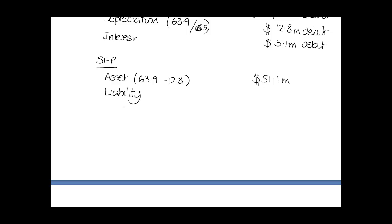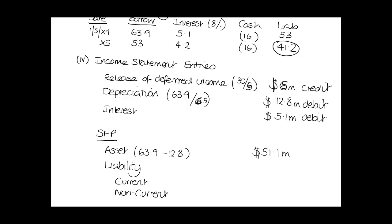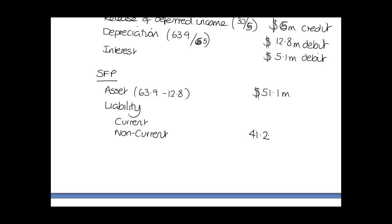If we look at the SFP, we'll have our asset which was 63.9 million and we take away the depreciation, so we have an asset of 51.1 million. Our liability will have a current and non-current. The non-current is what we expect the liability to be in a year which is 41.2. We know that the total liability is 53, which means that the current liability is the balance, 11.8. That's what we're doing for the 6 marks. Very few people got this right in the exam because they didn't read the question carefully enough.